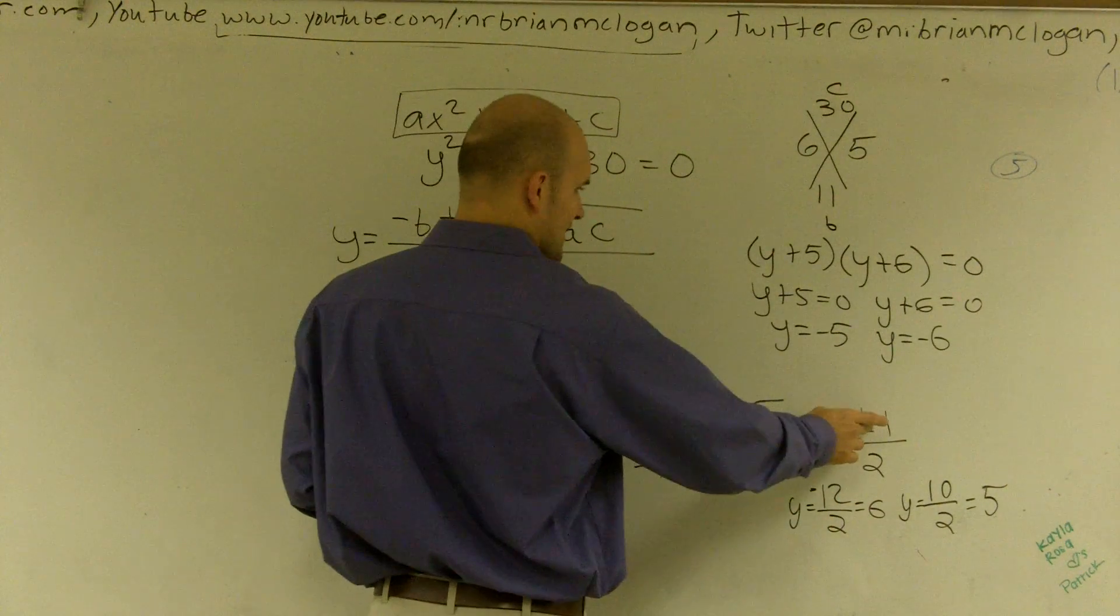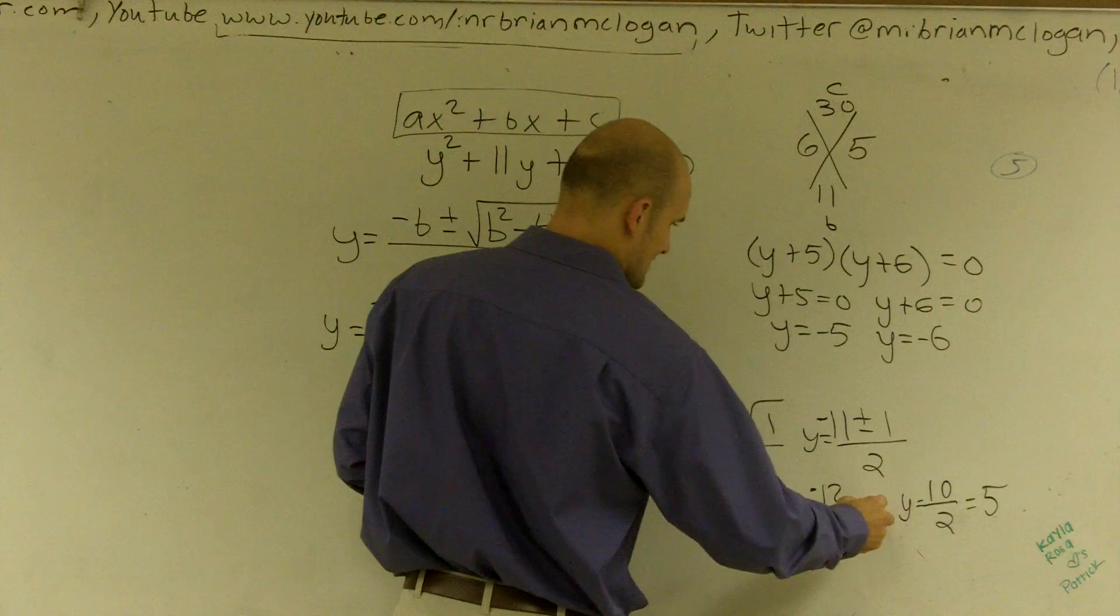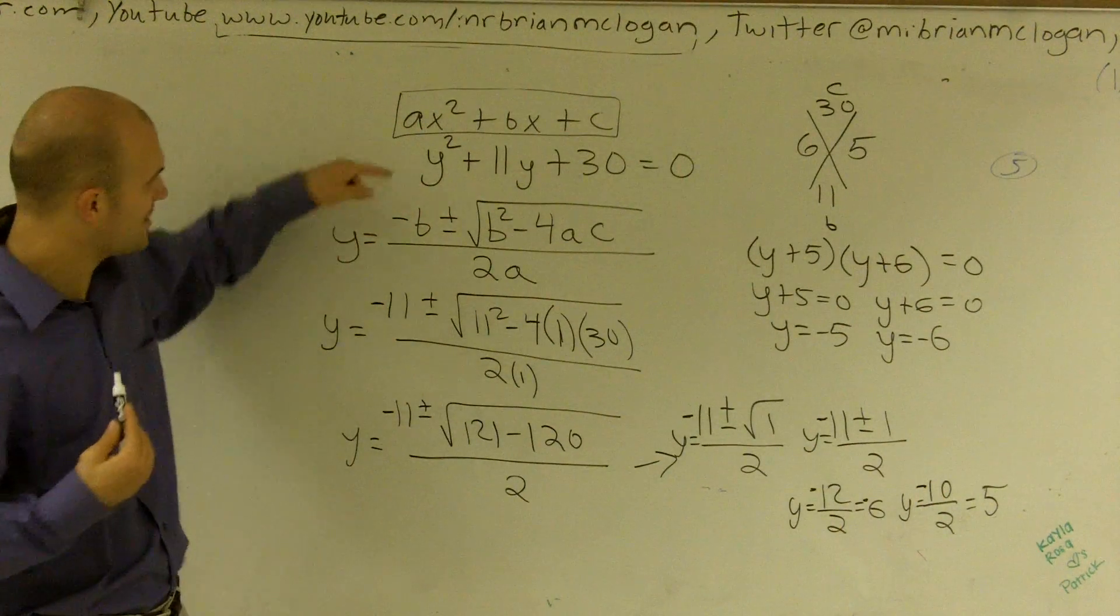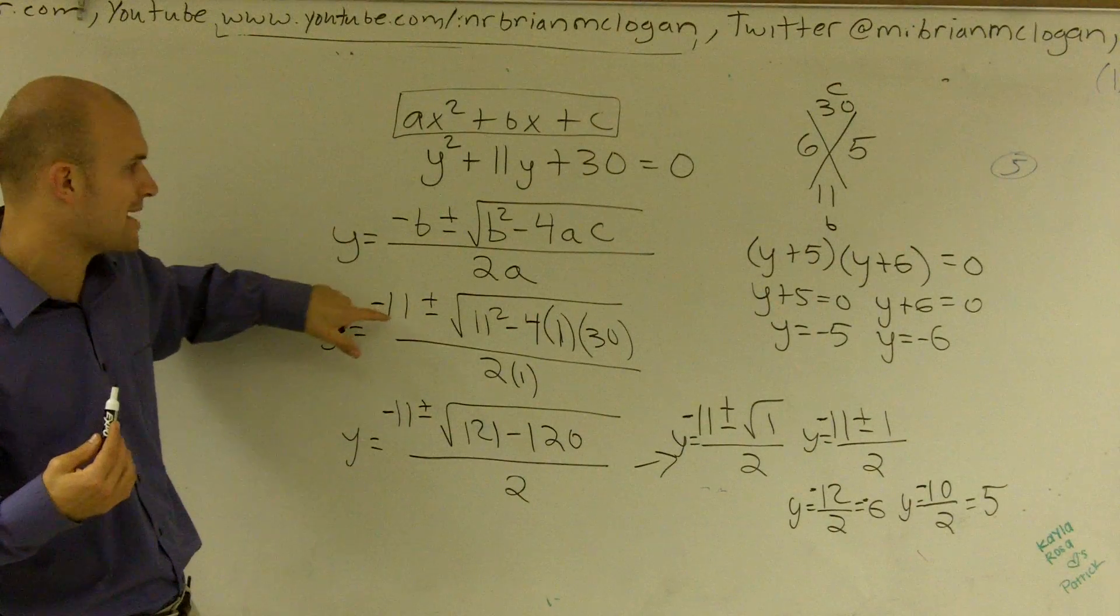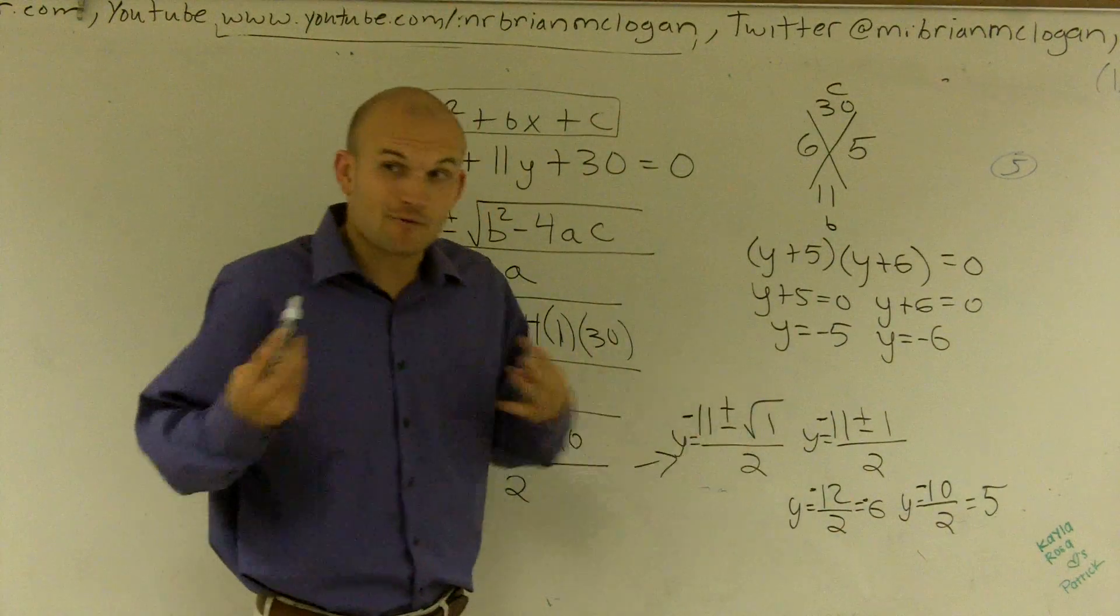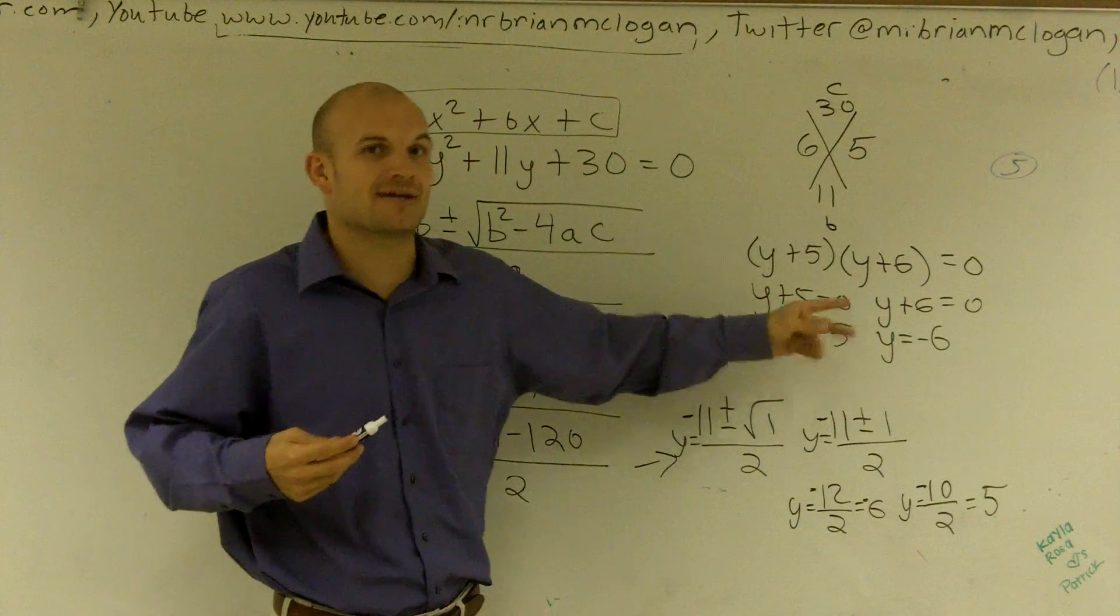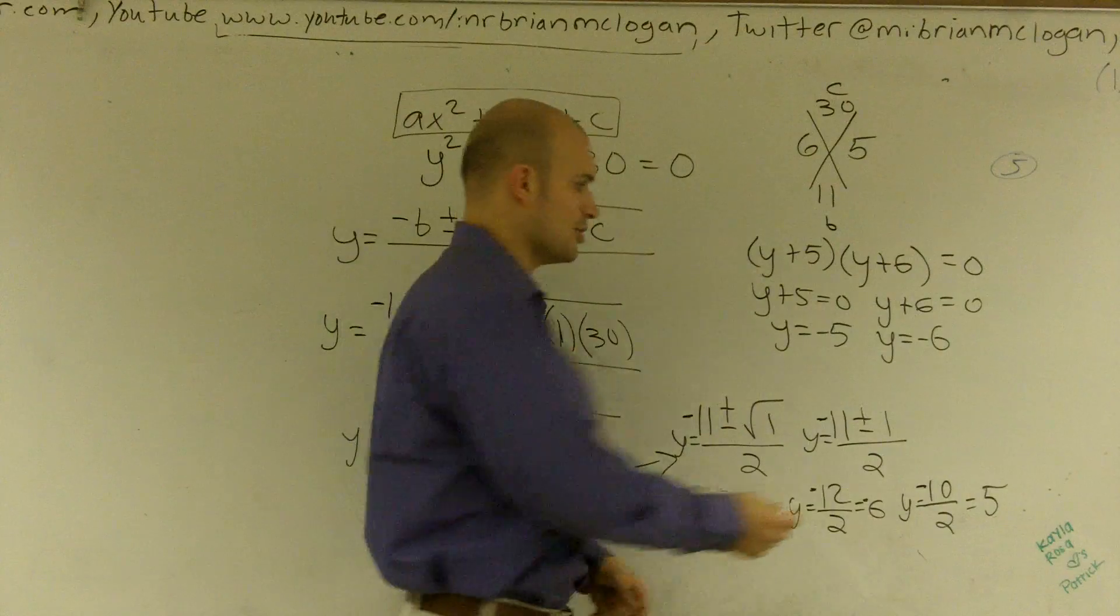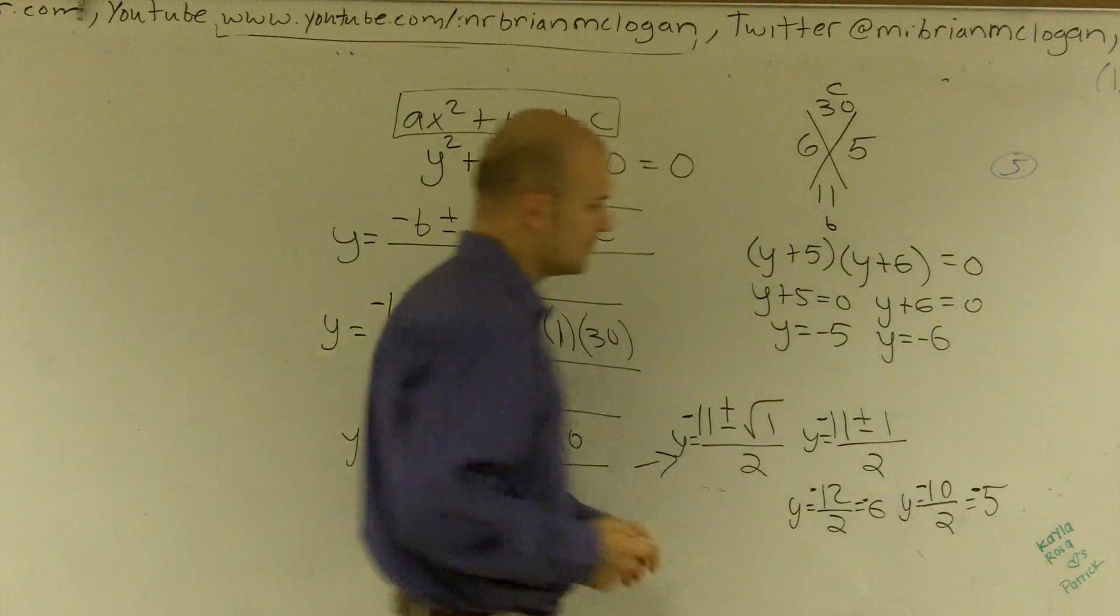So negative 11 minus 1 would be negative 12. So that's a negative 6. Be careful. I can even make my mistakes too. Remember, it's opposite of b. And look, I just wrote a positive 11. You've got to make sure you do opposite of that sign. So now, I would probably have made that mistake unless I would have factored it, that's how I caught my mistake. So make sure you guys watch that so you can see that. I know my two answers are negative 5 and negative 6.